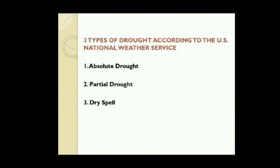The U.S. National Weather Service has also classified drought into three parts. First, absolute drought — which occurs when there is no rain over a period of at least 15 days with less than 0.01 inches of rain. Second, partial drought — no rain for at least 29 consecutive days and rainfall does not exceed 0.01 inches. Dry spell — no rain for at least 15 consecutive days and rain is less than 0.03 inches.